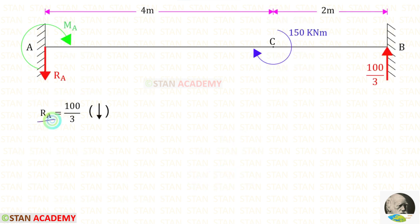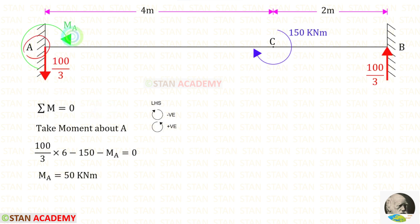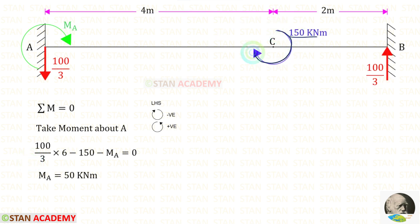Now let us find RA. Since RB is acting upwards and there is no vertical load on the beam, RA and RB will be equal in magnitude but opposite in direction. So RA acts downward with magnitude 100/3 kN. Taking moments about A: RB is anticlockwise (positive) at distance 6, so (100/3) × 6 = 200. The concentrated moment is clockwise (negative: −150). Assuming MA acts clockwise (negative), solving gives MA as a positive value, confirming our assumption. MA acts in the clockwise direction.